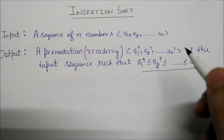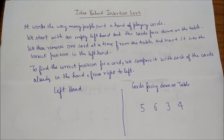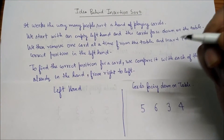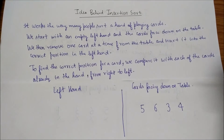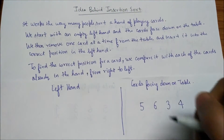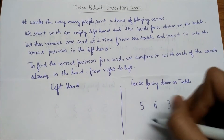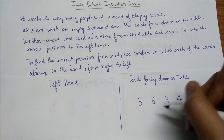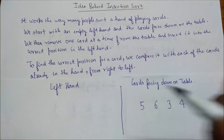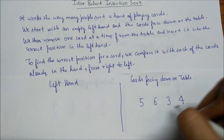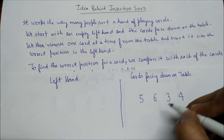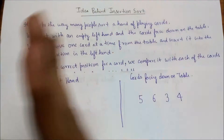Now we will see the idea behind insertion sort. It works the way many people sort a hand of playing cards. We start with an empty left hand and cards facing down on the table. We remove one card at a time from the table and insert it into the correct position in the left hand.